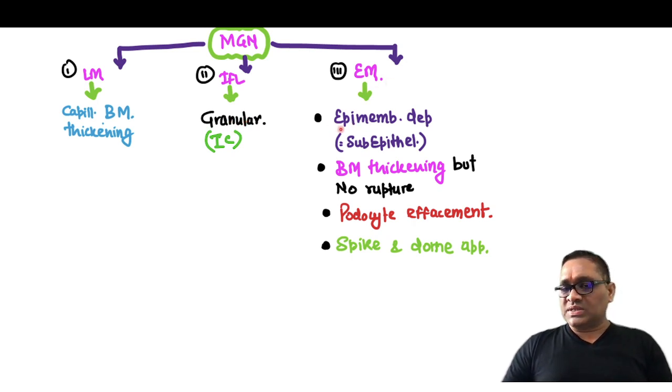And on electron microscopy, you will see epimembranous deposit which is subepithelial deposit. Basement membrane thickening but no rupture. Podocyte effacement as I have shown you and spike and dome appearance.